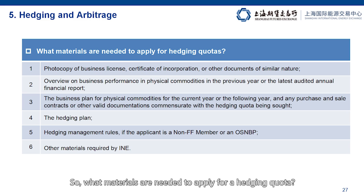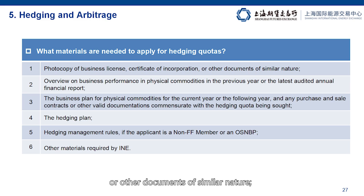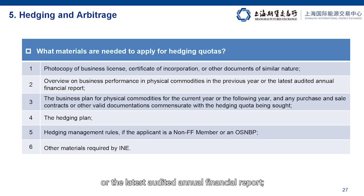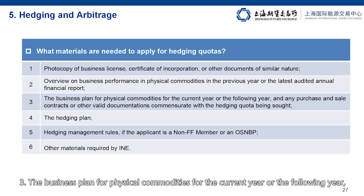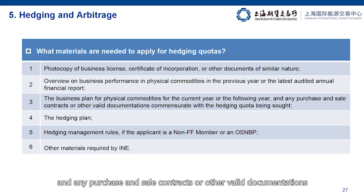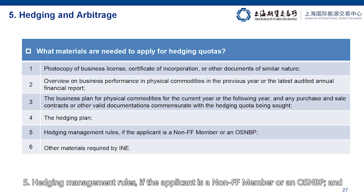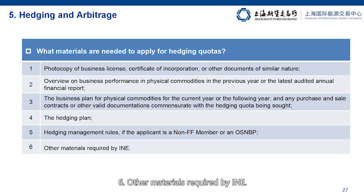What materials are needed to apply for a hedging quota? First, photocopy of business license, certificate of incorporation or other documents of similar nature. Second, overview on business performance in physical commodities in the previous year or the latest audited annual financial report. Third, the business plan for physical commodities for the current year or the following year, and any purchase and sale contracts or other valid recommendations commensurate with the hedging quota being sought. Fourth, the hedging plan. Fifth, hedging management rules if the applicant is a non-FF member or an OSMBP. And sixth, other materials required by INE.